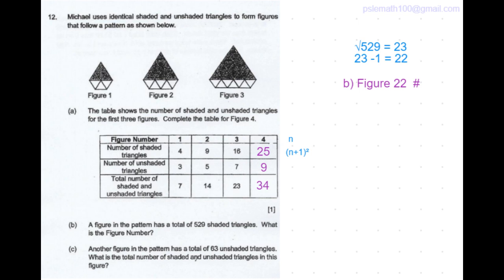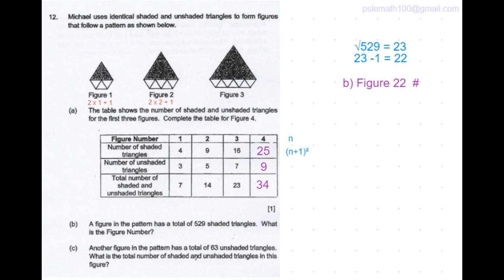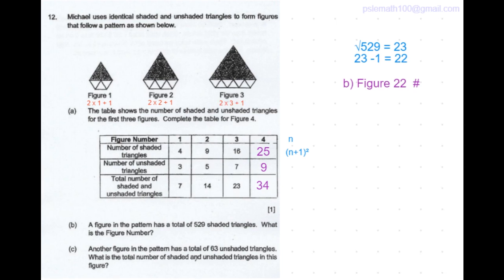And the increase in the number of unshaded triangles per figure is 2. So the number of unshaded triangles for figure 1 is 2 times 1 plus 1. Figure 2 is 2 times 2 plus 1. Figure 3 is 2 times 3 plus 1.